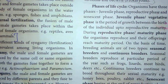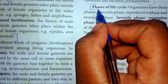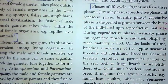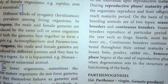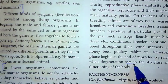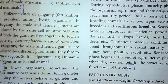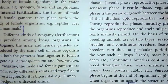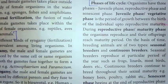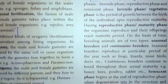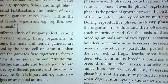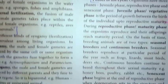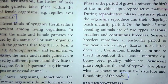For the fourth question — define the phases of the life cycle in organisms — the answer covers the phases of the life cycle, from juvenile phase through the functioning of the body. This is found in page number seven, starting from 'organisms have three phases' through to 'functioning of the body.'